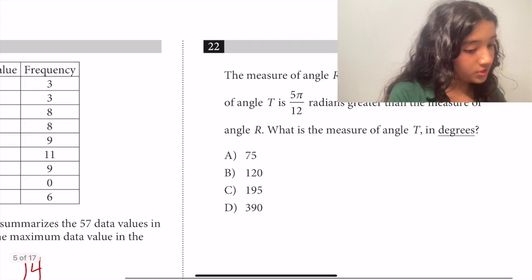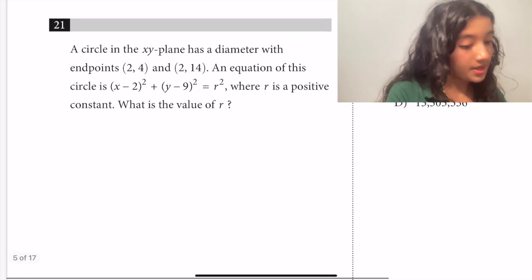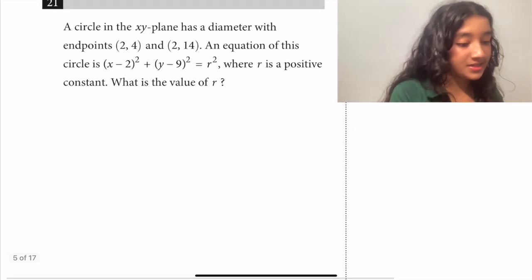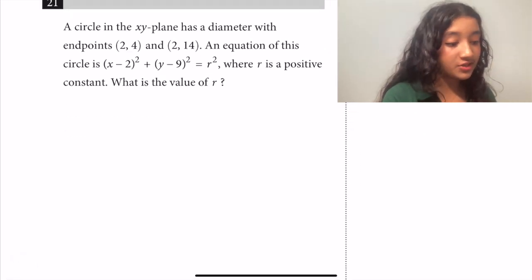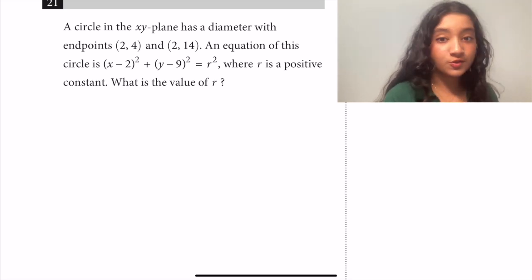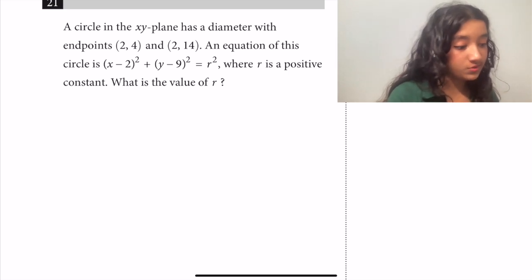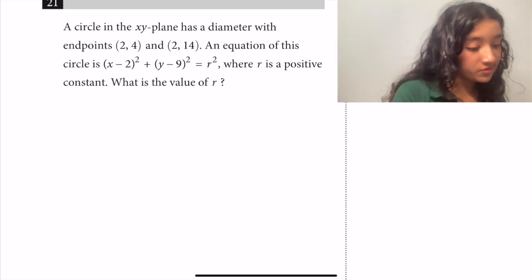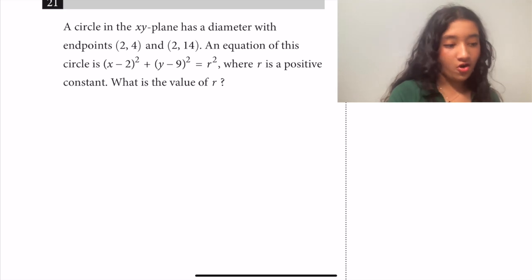Moving on to question 21. A circle in the xy plane has a diameter with endpoints (2, 4) and (2, 14). An equation of this circle is (x - 2)² + (y - 9)² = r², where r is a positive constant. What is the value of r?